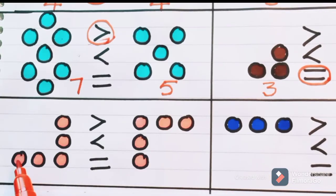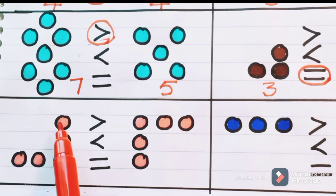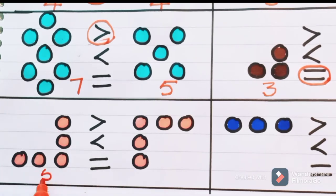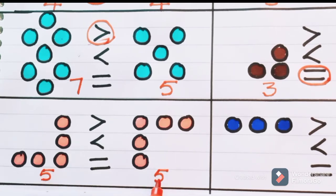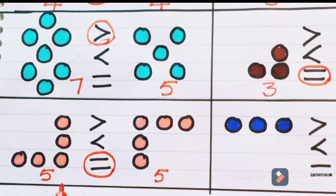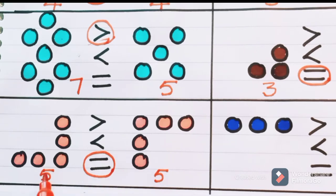Now see children, one, two, three, four, five — we have five circles here. And one, two, three, four, five — here also we have five circles. So are these same numbers or different numbers? These are same numbers only. For same numbers, we have to use equal to symbol. Five is equal to five.